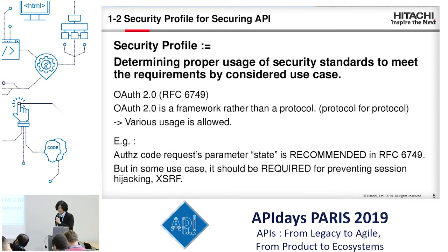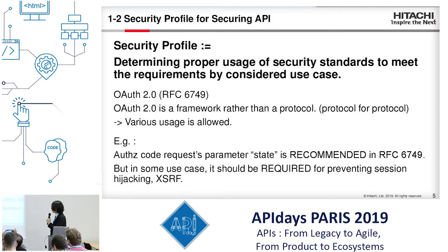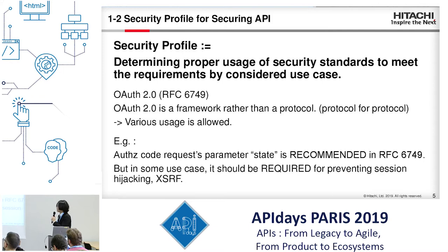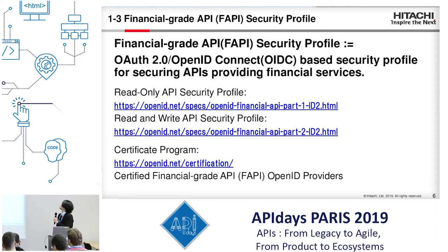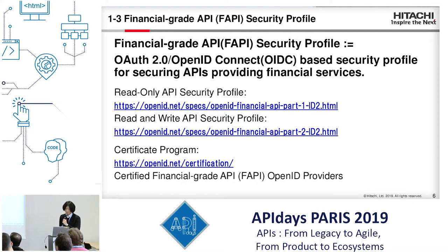For example, the state parameter in OAuth 2 is recommended to be used, but in some cases it should be required to prevent session hijacking. Here I would like to pick up two such security profiles. The first is the Financial Grade API, or FAPI, security profile. It is an OIDC-based security profile.